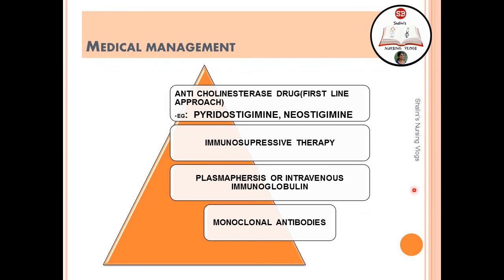Management of myasthenia gravis includes: acetylcholinesterase inhibitors — the primary drugs of choice are pyridostigmine and neostigmine; immunosuppressive therapy; plasmapheresis to remove antibodies from the body; and monoclonal antibodies. These are the four main management measures for a patient with myasthenia gravis.